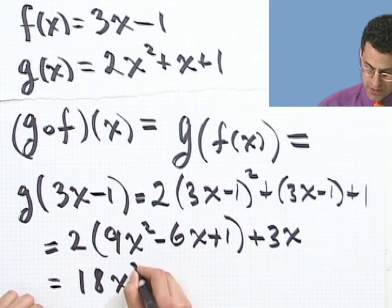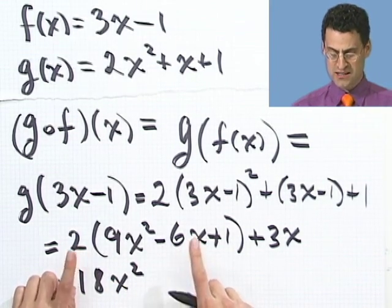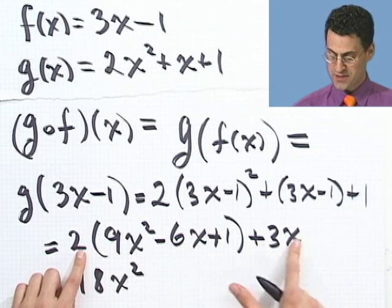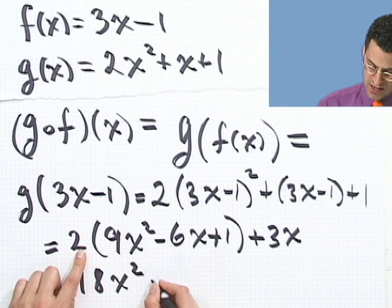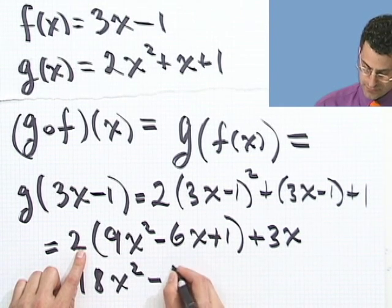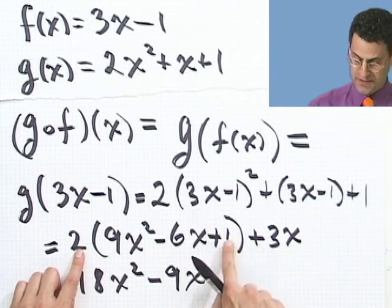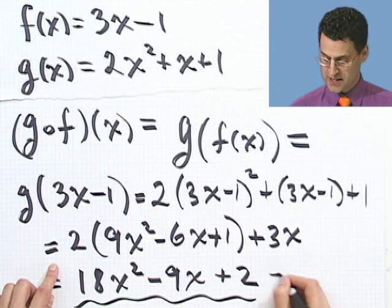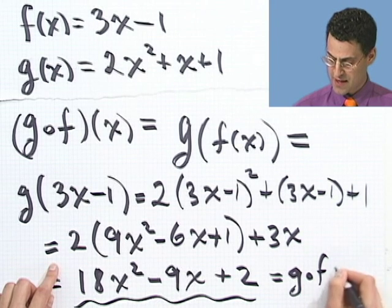I'd see 18x squared. Here I'd see a minus 12x, minus 12x plus 3x is minus 9x. And then don't forget to distribute the 2 everywhere, I get a plus 2. So this equals g composed with f of x.